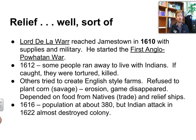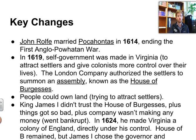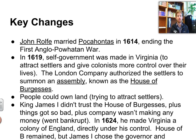Then an Indian attack in 1622 nearly destroyed the colony. Some key changes happened around this time. You may have seen the Disney movie Pocahontas — historically inaccurate — but John Rolfe, who marries Pocahontas in 1614, is a real figure. This marriage was sort of a peace settlement between the English and the Powhatans, ending the war, which was good.